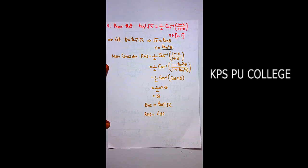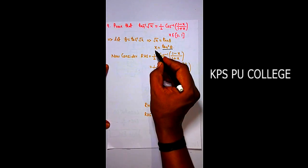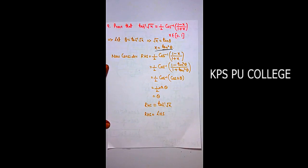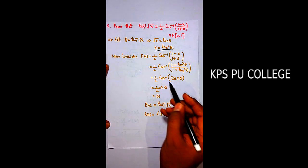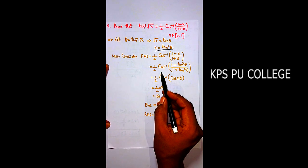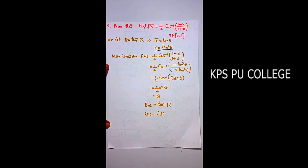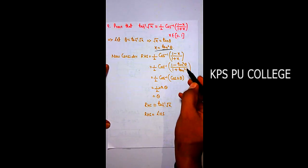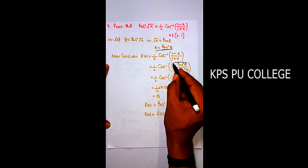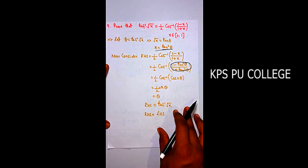Now consider the RHS of the required result. RHS = ½ cos⁻¹((1-x)/(1+x)). Since x = tan²θ, replace x: RHS = ½ cos⁻¹((1 - tan²θ)/(1 + tan²θ)). This expression equals ½ cos⁻¹(cos 2θ).